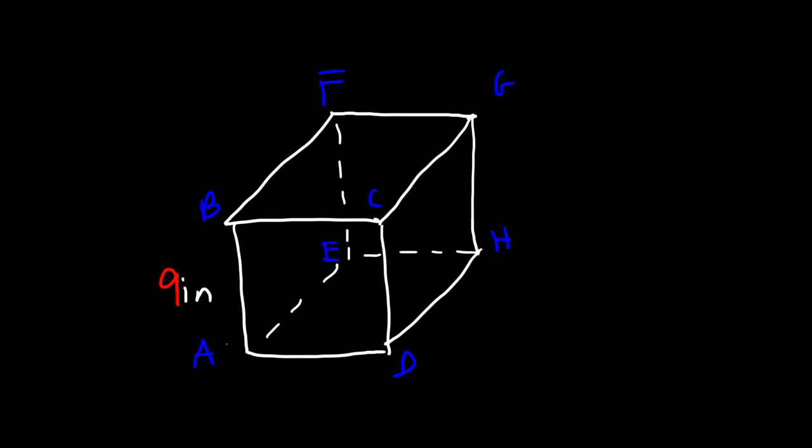So what's the distance between point A and point G? How can we calculate it? And let's say the side length is X. So let's derive the formula.